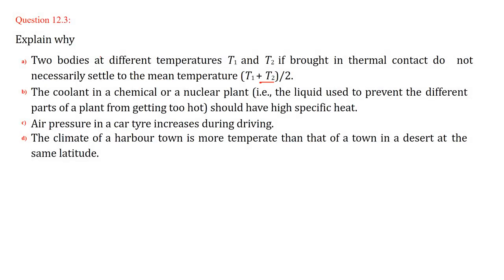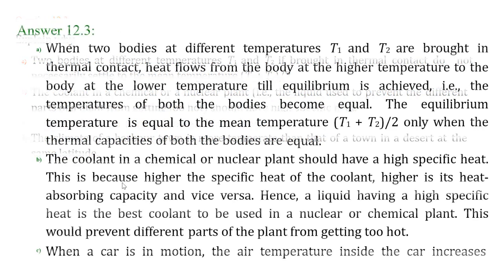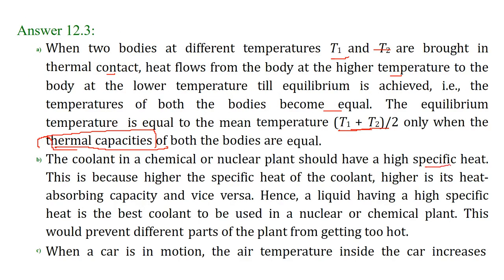The next is the coolant. Coolant in different plants like chemical or nuclear plants should have high specific heat. This is the liquid used to prevent different parts of a plant from getting too hot — that is why it is called a coolant. The coolant in these plants should have high specific heat because higher the specific heat of the coolant, higher is the heat absorbing capacity, and that is exactly what this coolant is being used for. A liquid having high specific heat is best for use as a coolant in nuclear, chemical, or any other plant, and it would definitely prevent different parts of the plant from getting too hot.